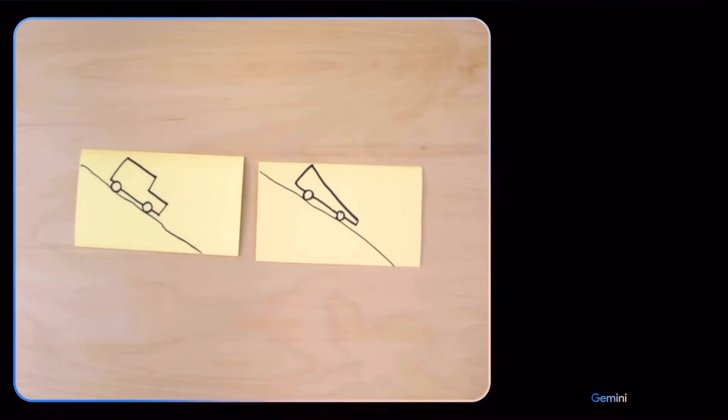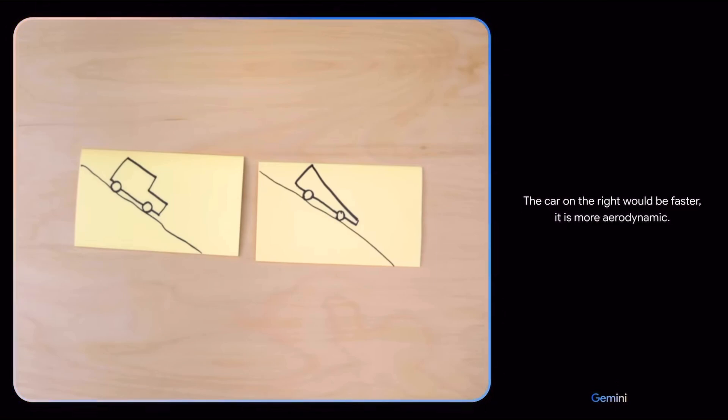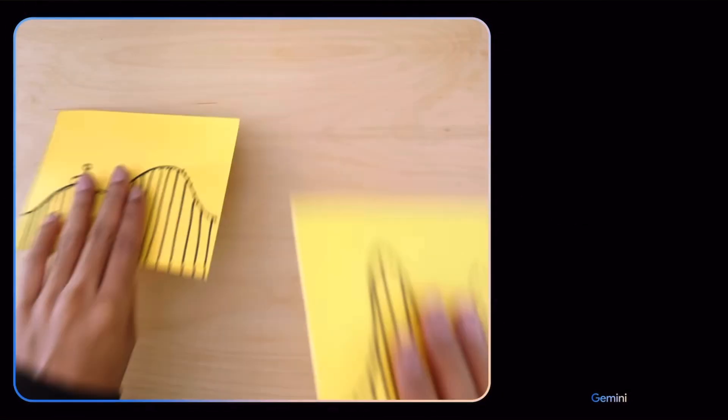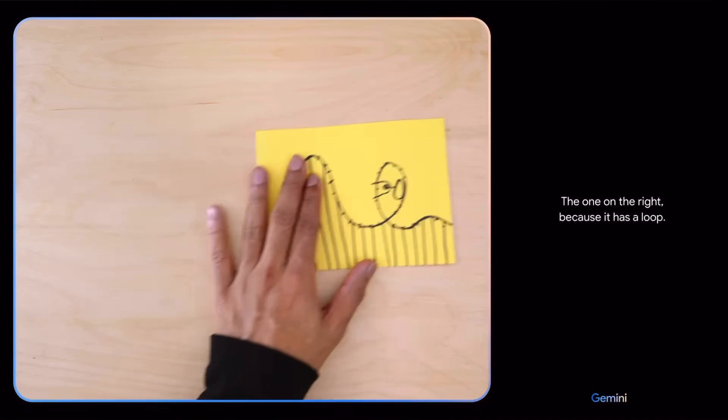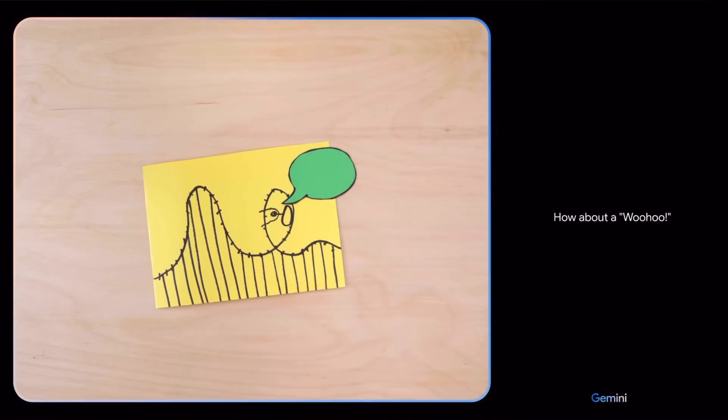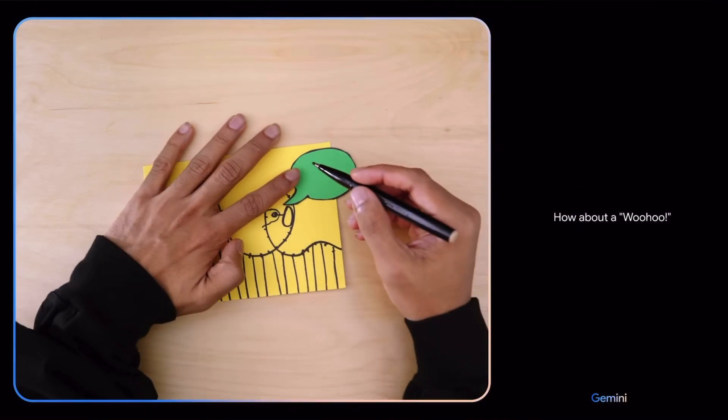Based on their design, which of these would go faster? The car on the right would be faster. It is more aerodynamic. Which looks more fun? The one on the right, because it has a loop. What do you think this person might be saying? How about a woohoo? I love that.